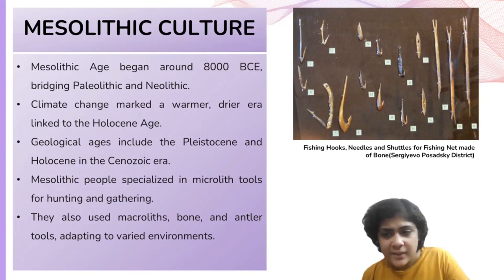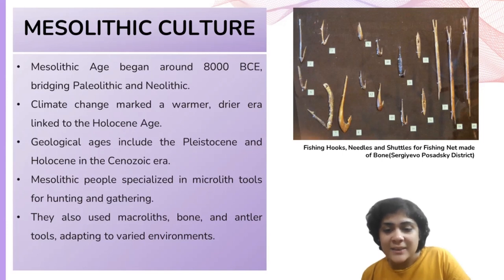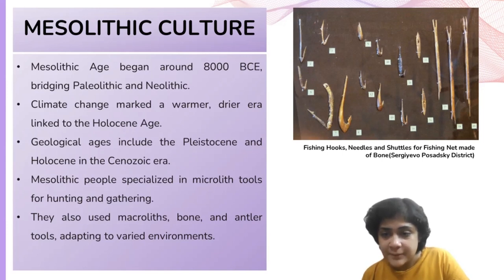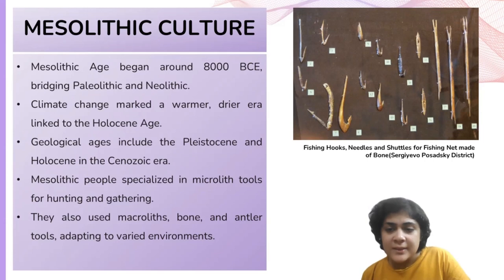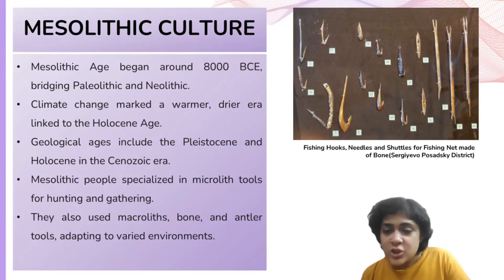Microliths served as composite tools for a range of activities including plant gathering, harvesting, slicing, grating, and processing plant fibers, as well as creating lines, snares, and net traps. These microliths were fixed to wood, bone, and antlers, often arranged to form a straight cutting edge, sometimes with slanting blades, micro-blades, notched blades, and serrated blades.